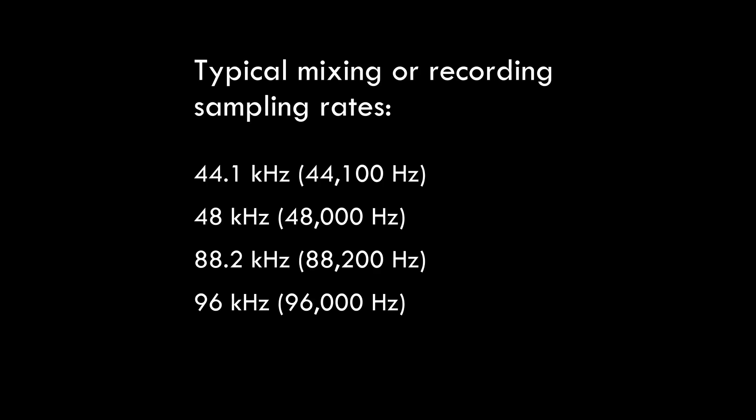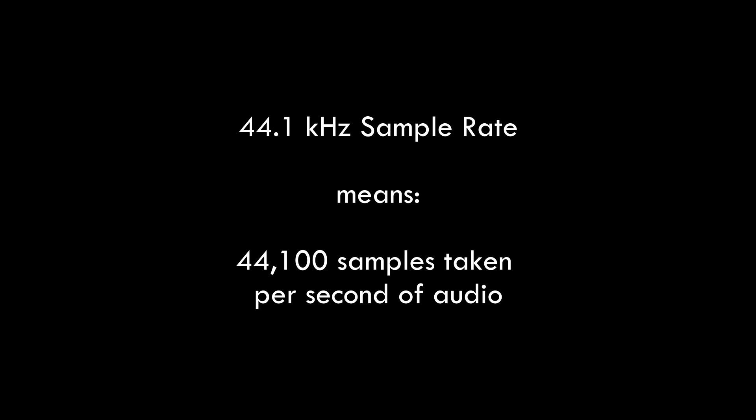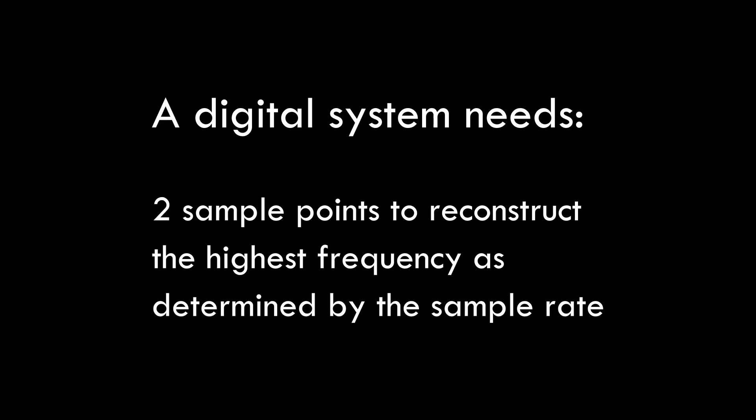In very simple terms, an alias happens when one frequency is incorrectly coded as another frequency. The highest frequency your system can record is determined by your session sampling rate — commonly 44.1 kilohertz, 48 kilohertz, and so on. A digital system needs just two sample points to reconstruct the highest frequency that the sampling rate can accurately represent.